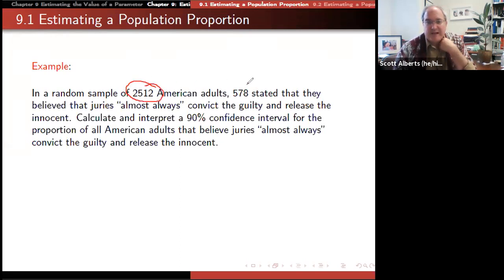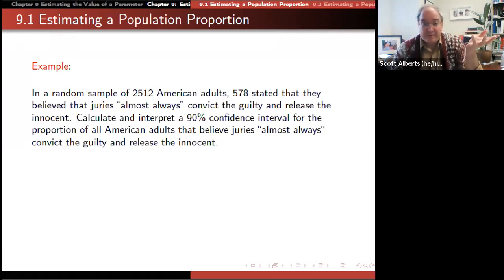This is from a survey. We don't know what the true value is because it's a survey. We asked 2,512 adults whether or not they believe juries almost always convict the guilty and release the innocent. And of that, 578 said that they thought that juries almost always do that. She asked for a 90% confidence interval to find what we think the true proportion would be. We don't know what the true proportion is, it's kind of unknowable.